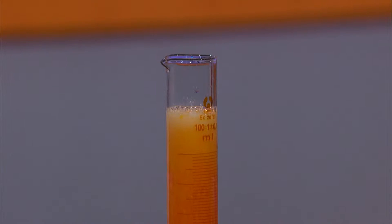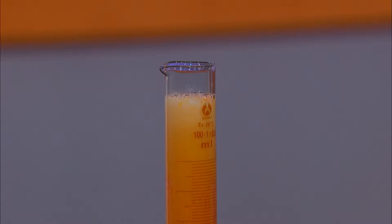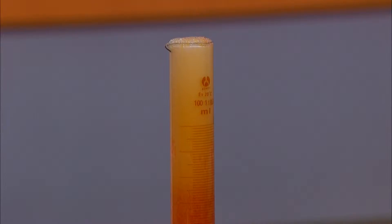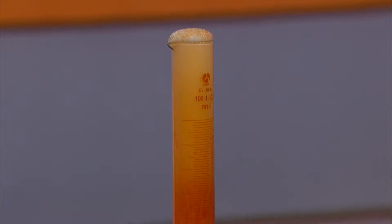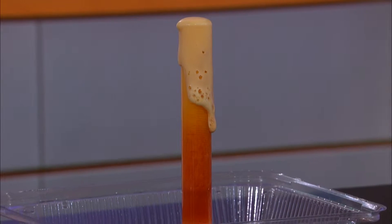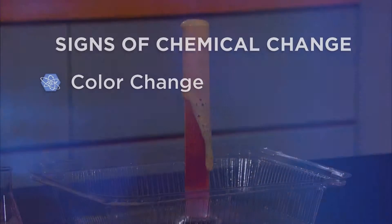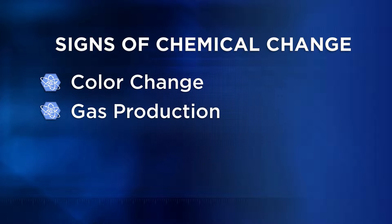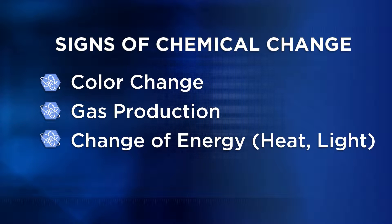The first change you might notice was color — it turned brown and then more of a yellow. Obviously bubbles formed in the liquid, meaning the liquid gave off gas quickly. That's two visible signs of chemical change: color change and the production of gas. A third change wasn't visible, but as the reaction takes place the mixture is getting warmer, so the third sign is a change in energy, which can be a temperature change.